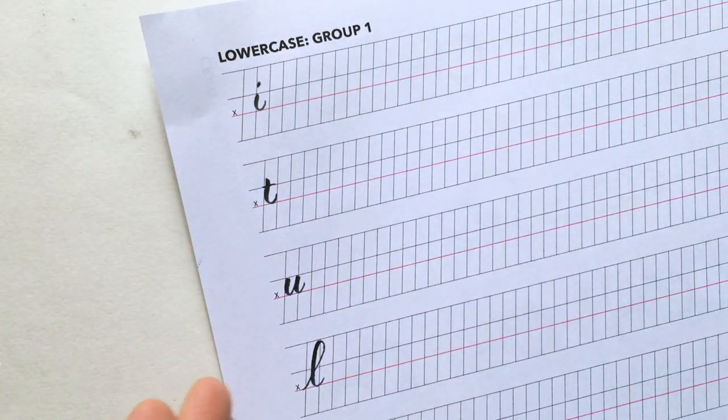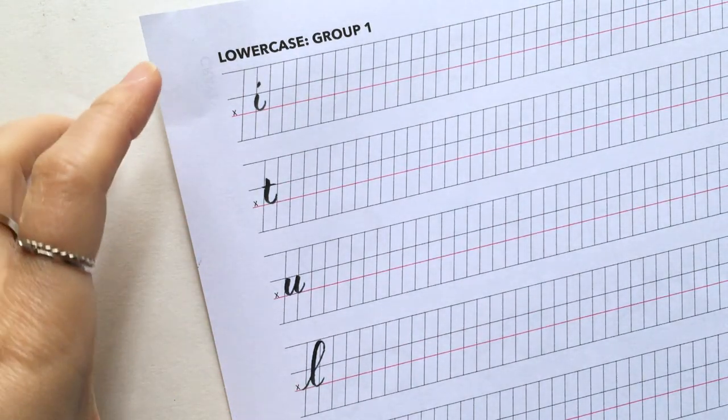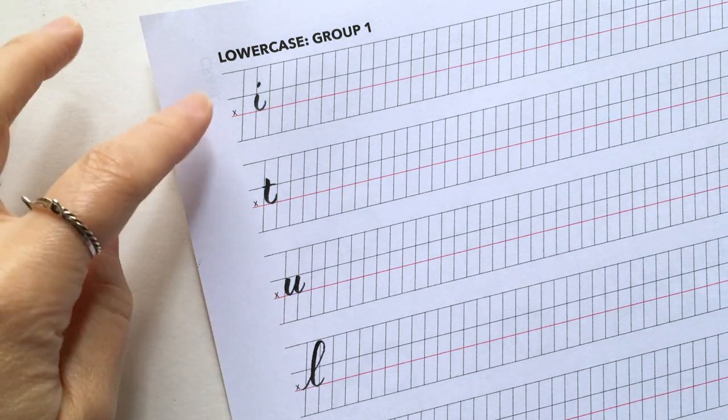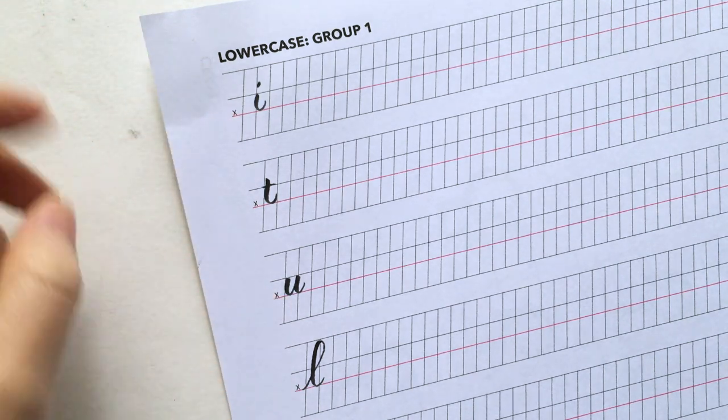And once we start practicing the letters, I have divided the lowercase letters into five groups depending on their letter form. That way we can practice the ones that are similar to each other and create consistency as we practice each letter.